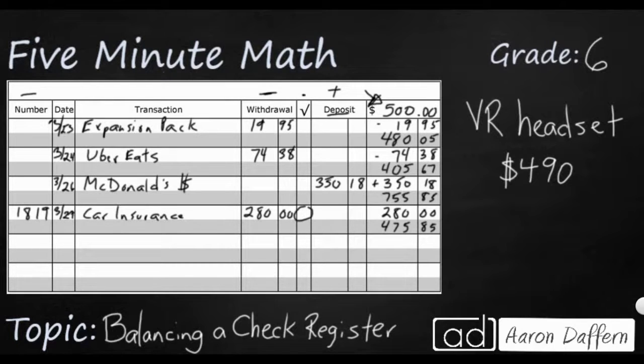So, right now, it doesn't look like you have enough money. But thank goodness for Grandma. Grandma gave you some money for your birthday. She gave you $20. So, we're going to put that right here. And lo and behold, with Grandma's $20, you've got $495.85, enough money for your headset.